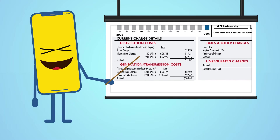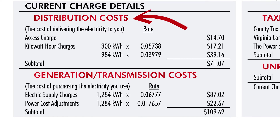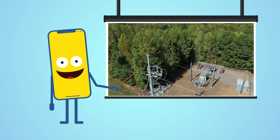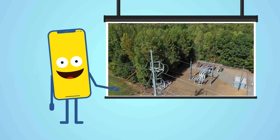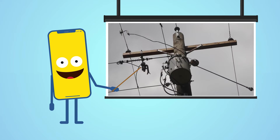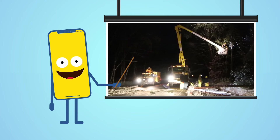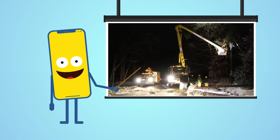Now let's look at the box labeled current charge details. Distribution costs represent the expenses related to actually getting the power to your home, such as wires and related equipment. The access charge covers the costs associated with making sure you have access to the electric grid, including substations, poles, transformers, meters, as well as the convenience of having 24-7 response from our trained professionals.